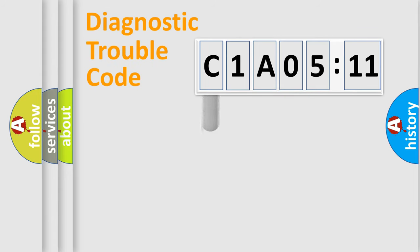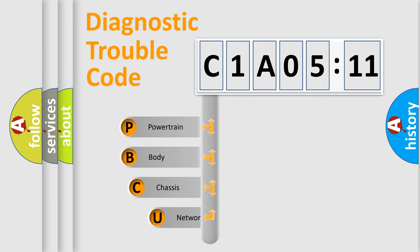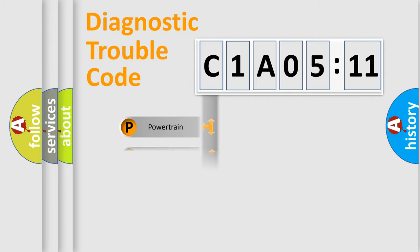First, let's look at the history of diagnostic fault code composition according to the OBD2 protocol, which is unified for all automakers since 2000. We divide the electric system of automobile into four basic units: Powertrain, Body, Chassis, and Network.